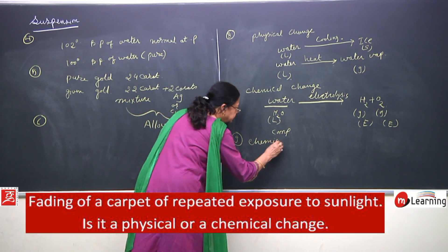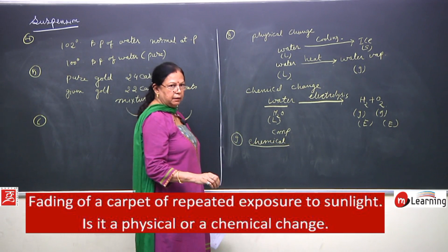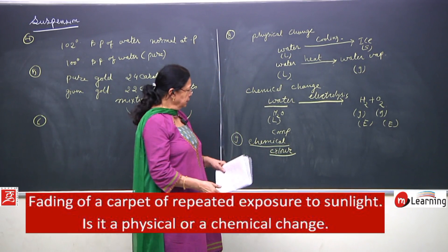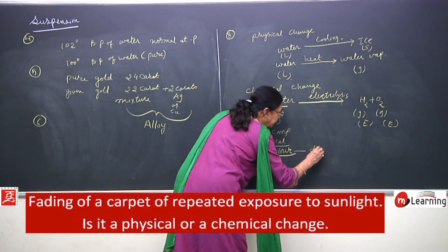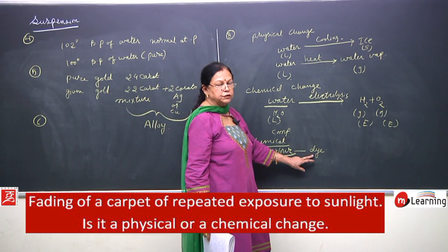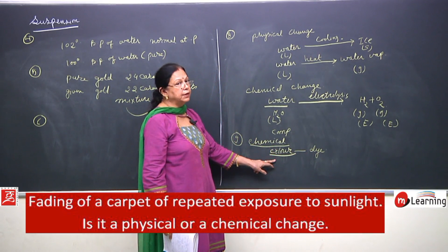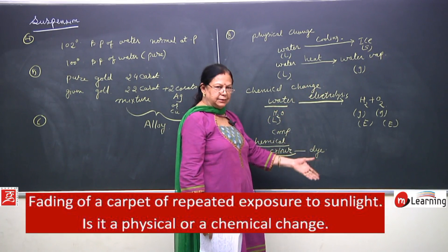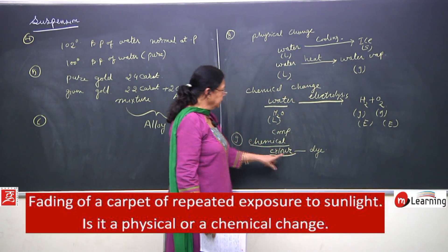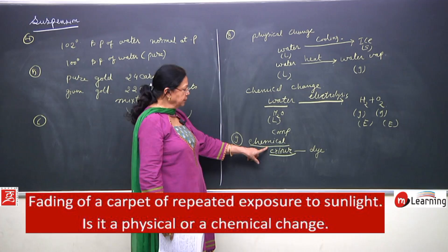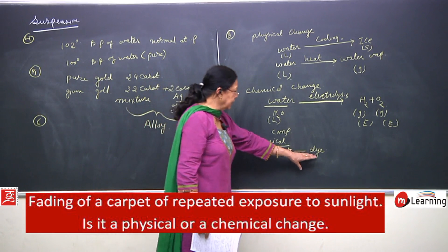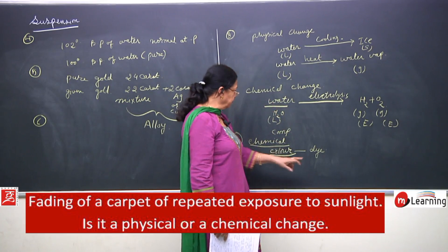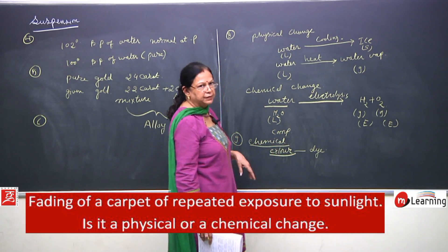Why is it a chemical change? The color present in the carpet or cloth comes from a dye. That dye is responsible for giving color. But when exposed to sunlight, the dye changes — its chemical composition changes — and therefore the color fades. So it is a chemical change because the chemical composition of the dye has changed.